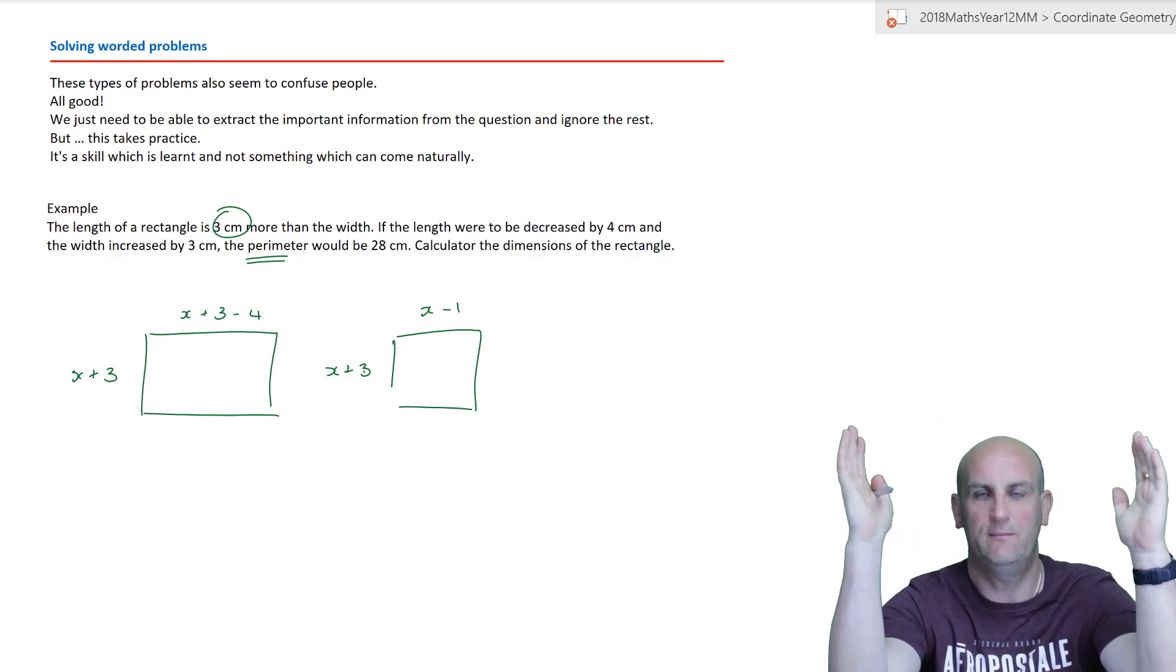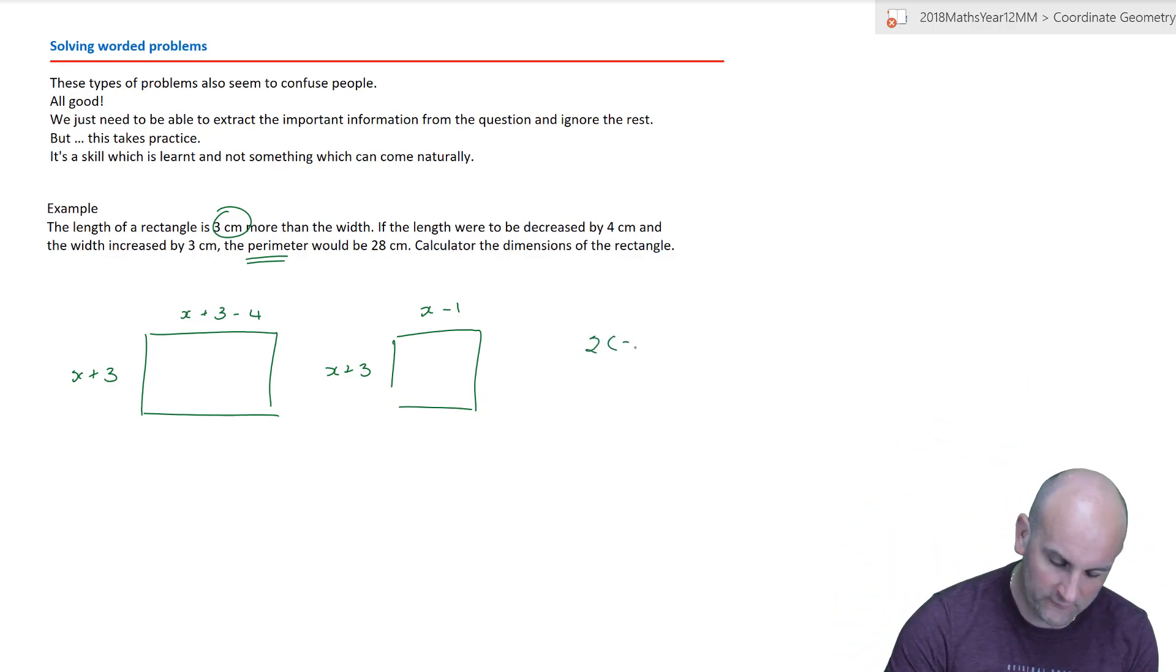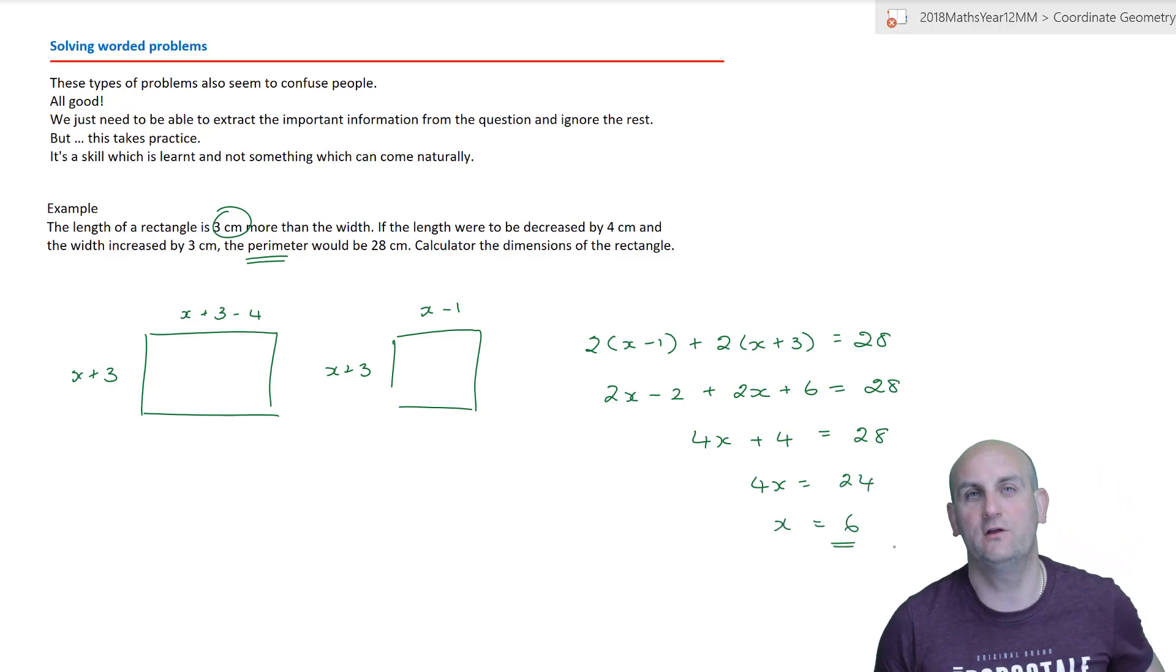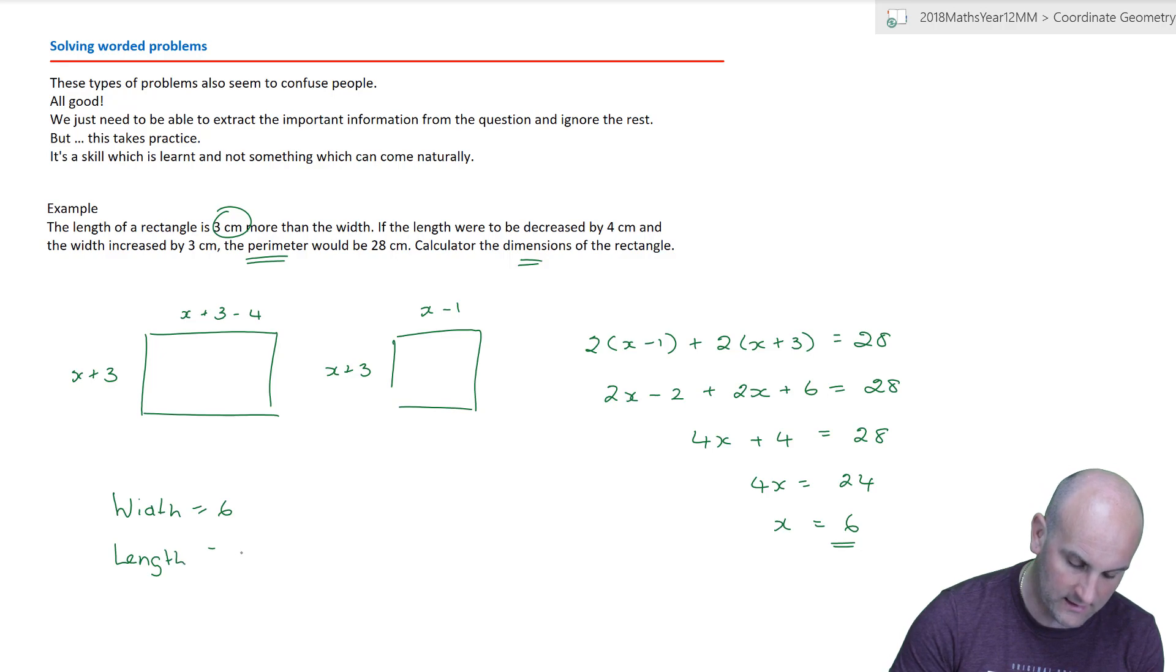So, two lots of x minus 1 plus two lots of x plus 3 must give me 28. 2x minus 2 plus 2x plus 6 is 28. So, 2x plus 2x is 4x. Minus 2 plus 6 is plus 4, gives me 28. So, take away 4 from both sides. Give me 24. And so, x must equal 6. And so, that means that, and this is not the end of the question. Remember, the question says calculate the dimensions of the rectangle. So, we would have to formally state that the width is 6 and the length was equal to 9.